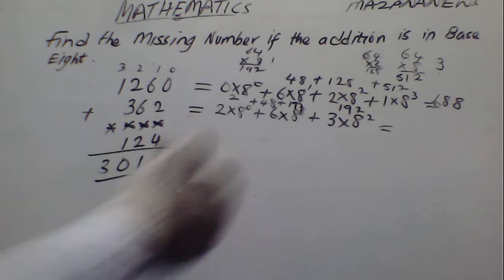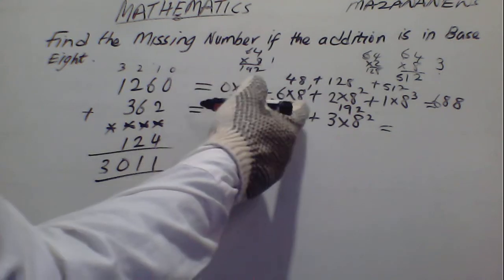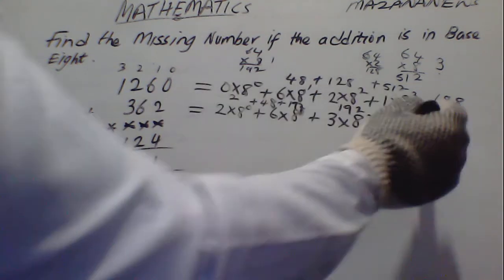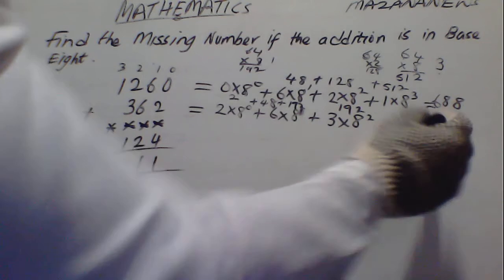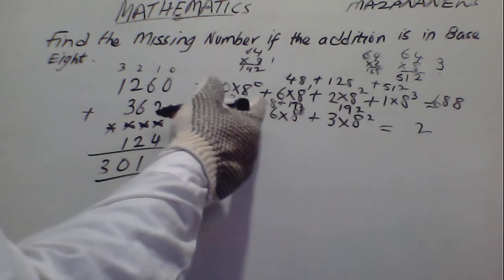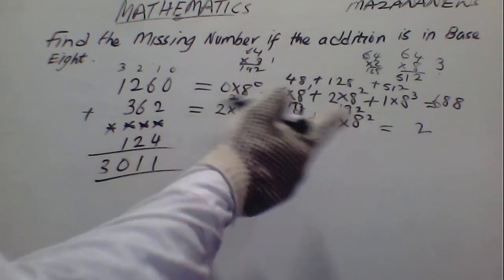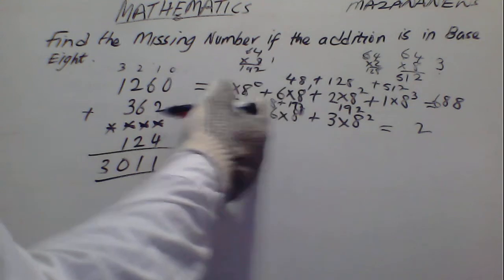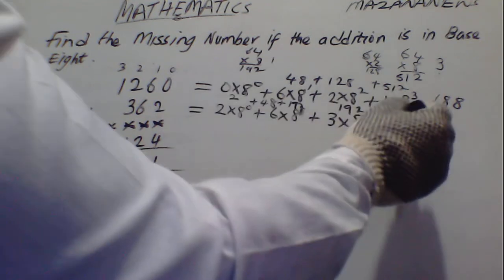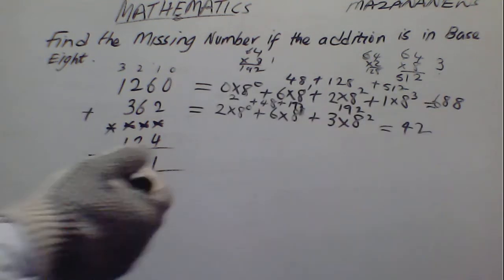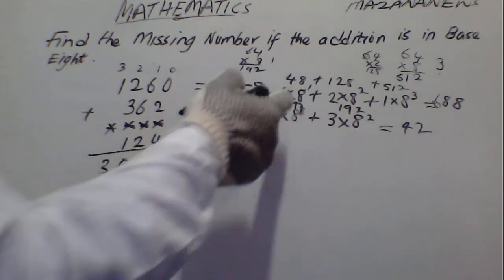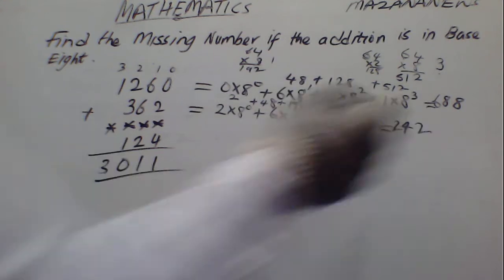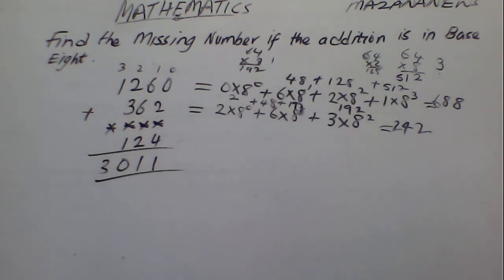So in this case we have: 10 plus 2 gives us 12 — carry 1. Remember you carry 1. So it could be 10 plus 4 gives us 14 — carry 1. This is 1 plus another 1 plus 2. So once we have 242.